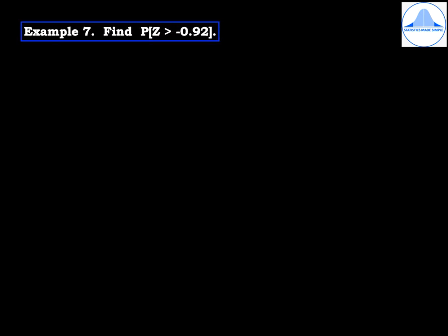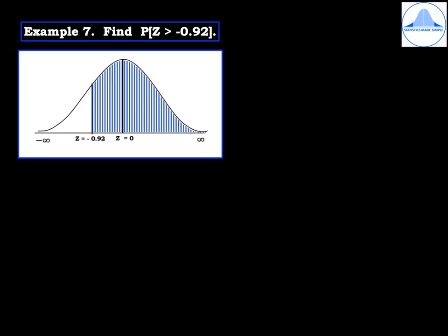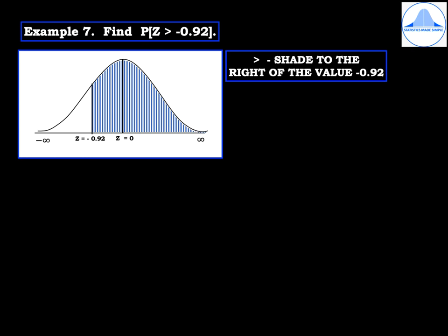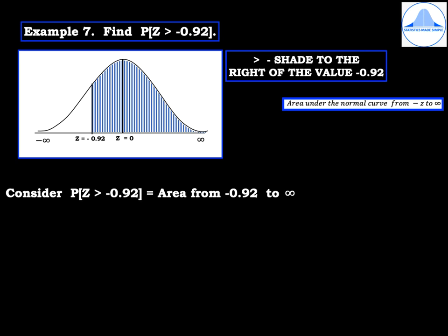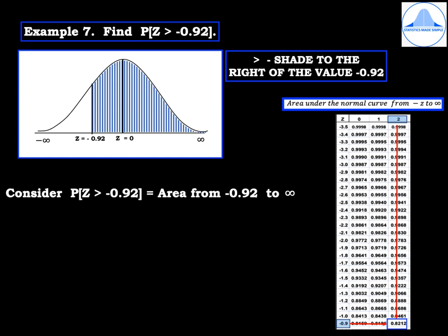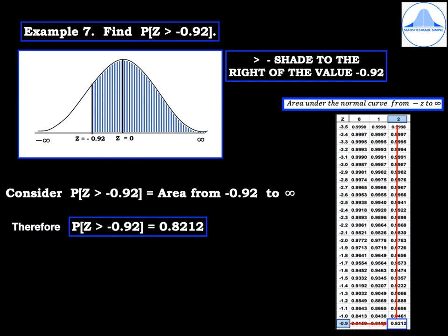Example 7: find probability of z greater than minus 0.92. Draw the standard normal curve with center line z equal to 0. Since minus 0.92 is negative, mark it on the left tail; greater than minus 0.92 means shade from minus 0.92 to infinity in blue. In the table from minus z to infinity, search for minus 0.9 under column 2 to get the probability 0.8212. Therefore probability of z greater than minus 0.92 is 0.8212.